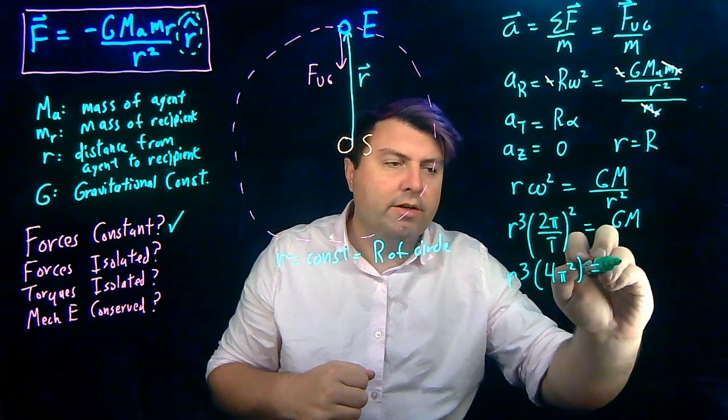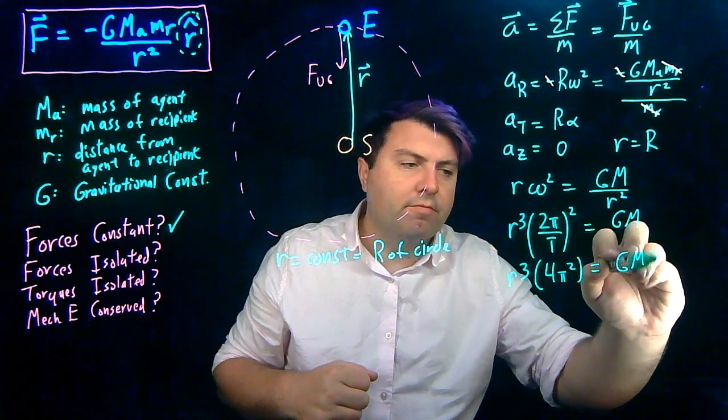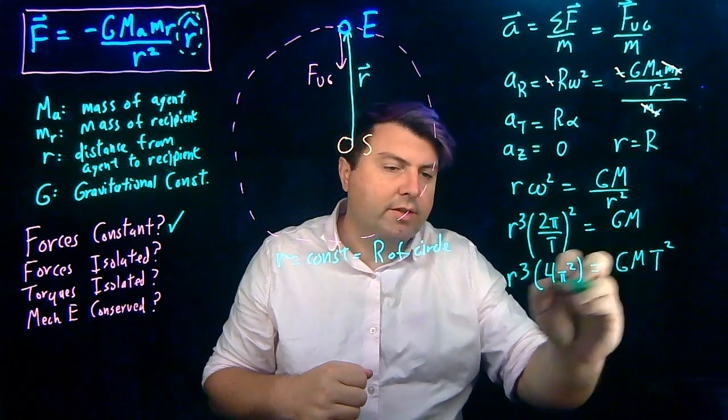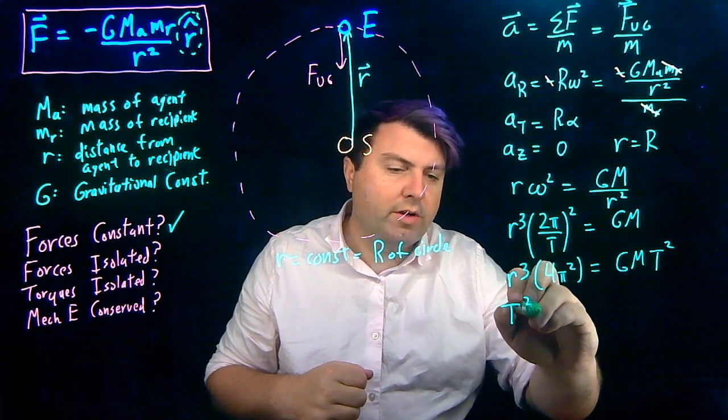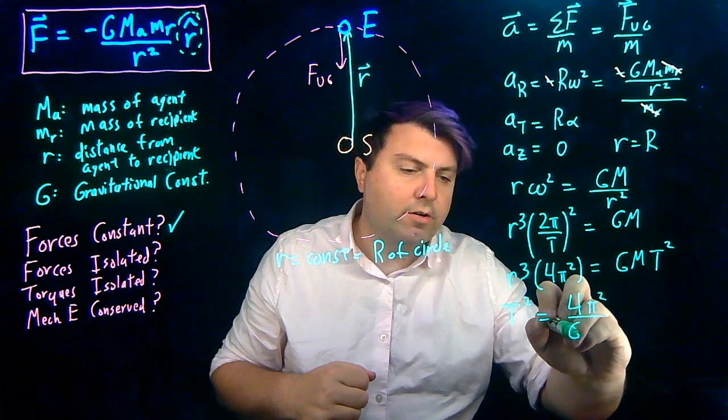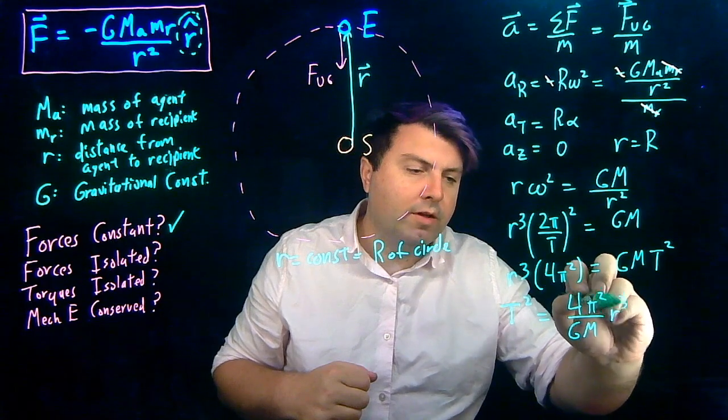4 pi squared is equal to G m times the period squared. So one last little thing I can solve for the period: I get t squared is equal to 4 pi squared over G m r to the third.